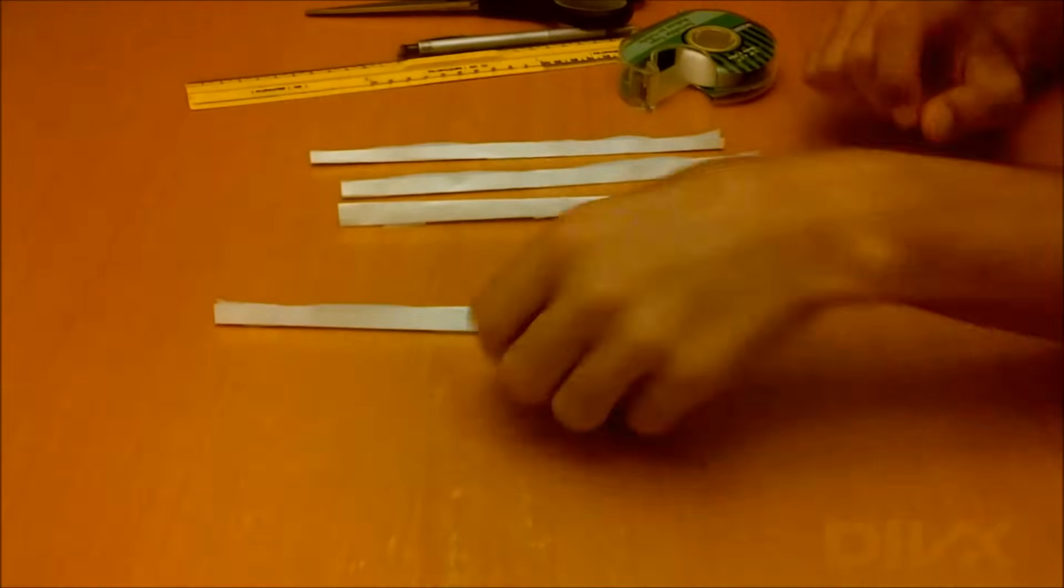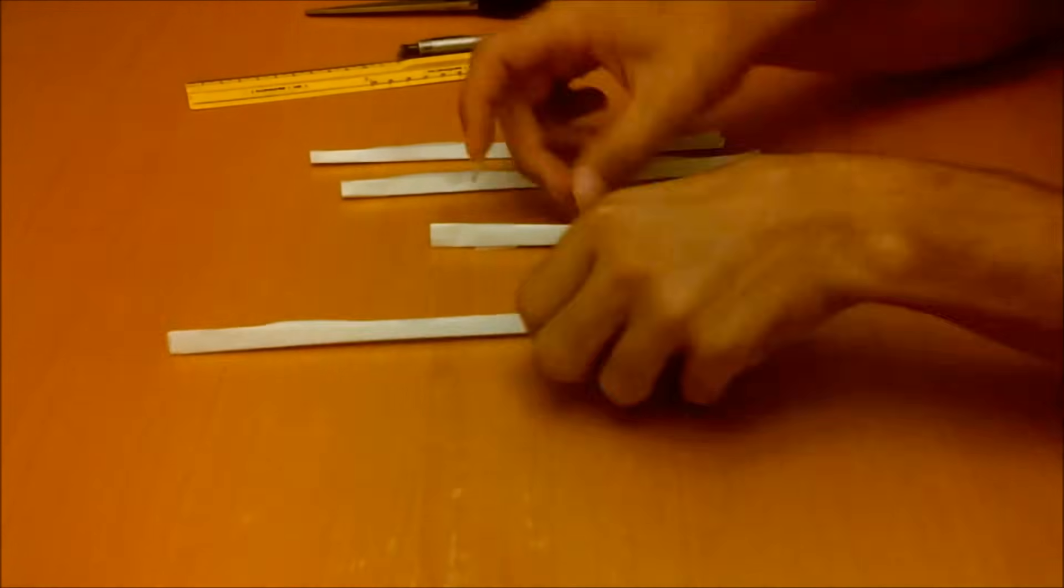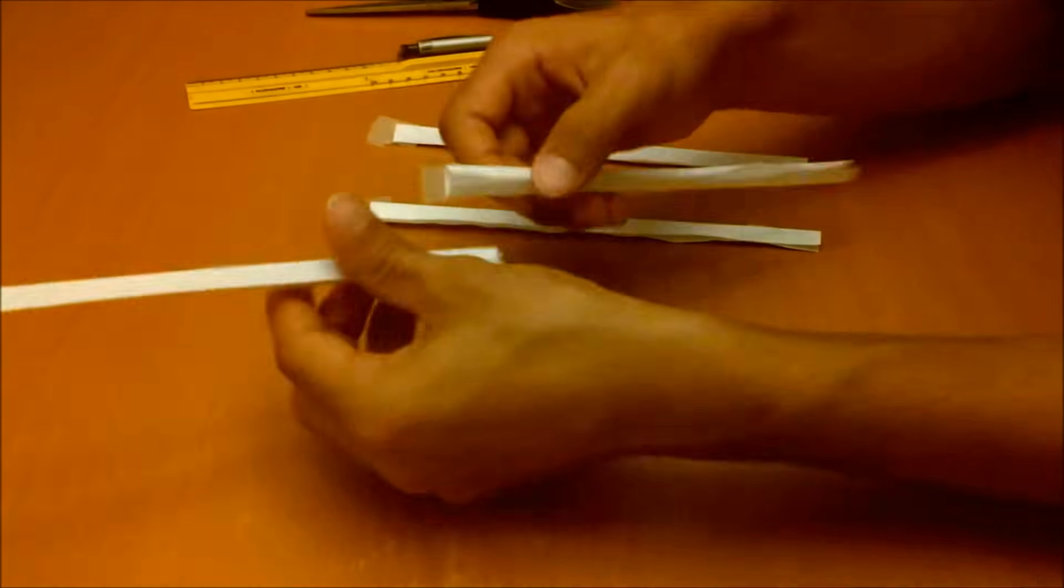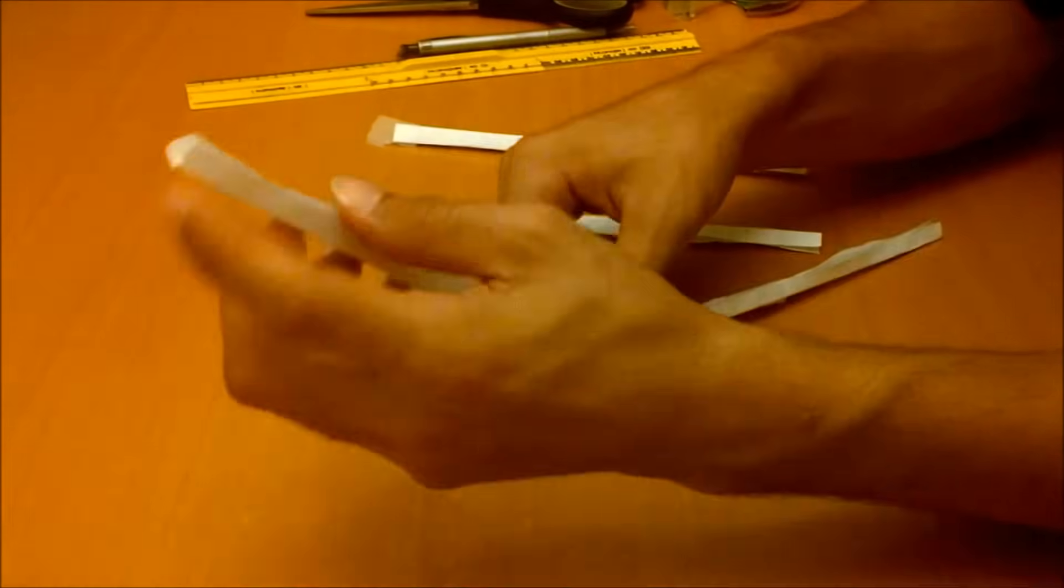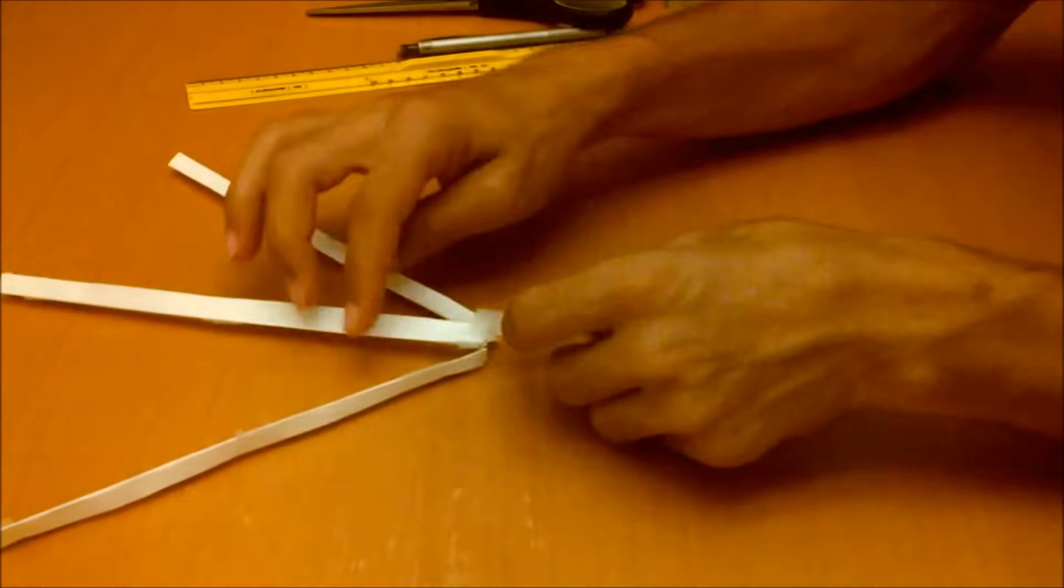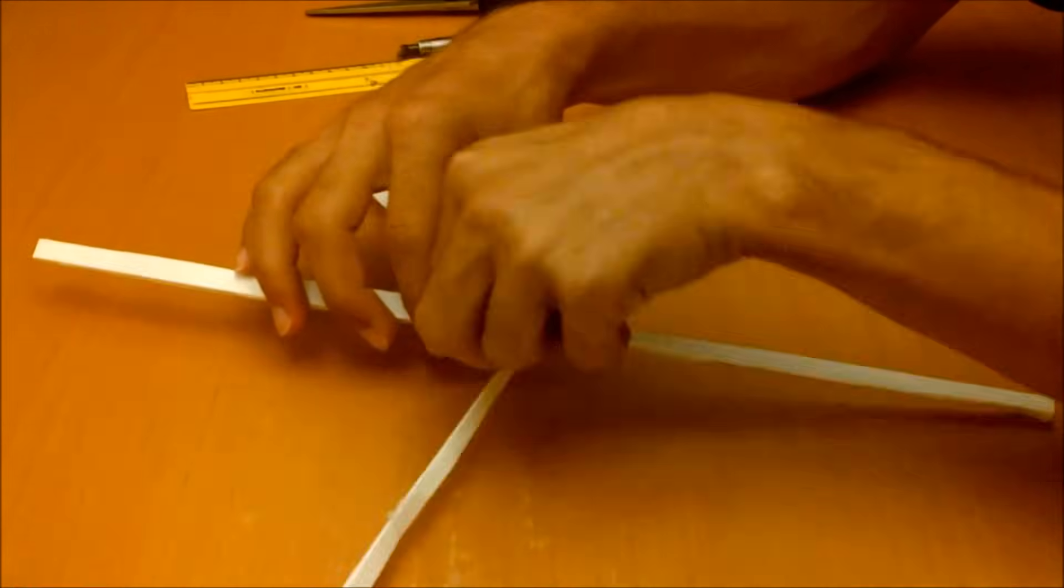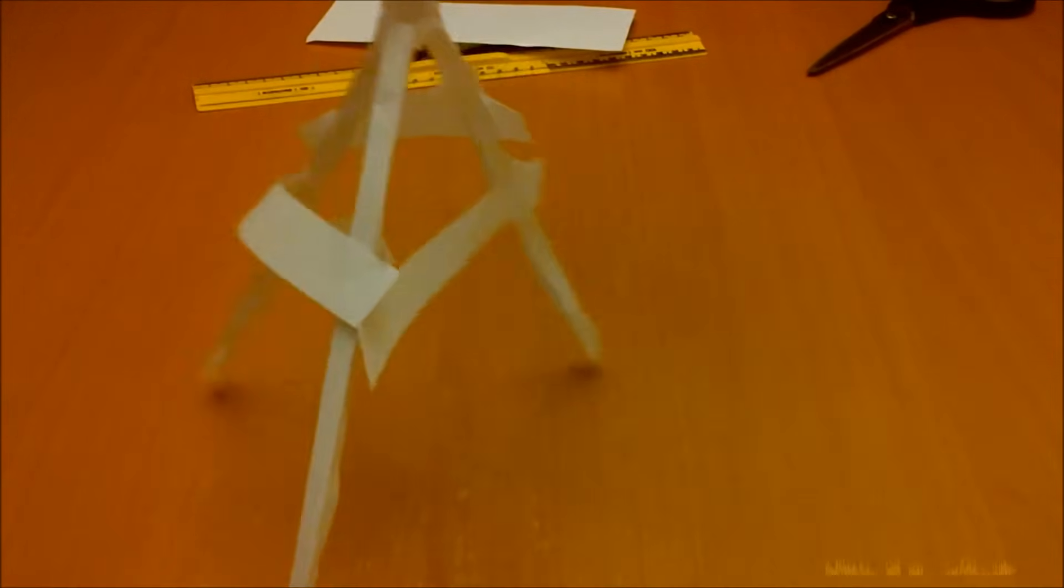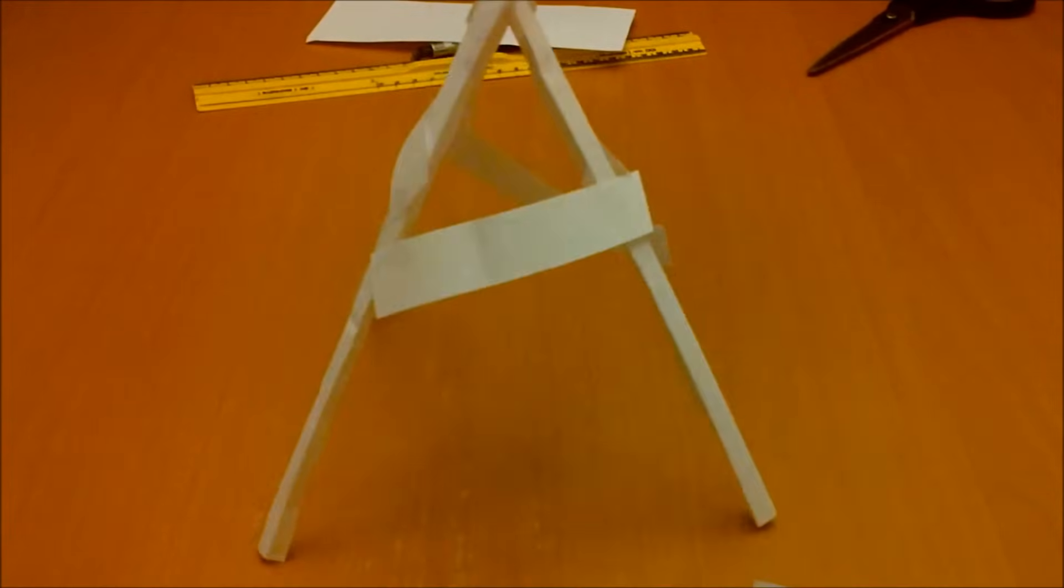You'll be using three to create a triangular-based pyramid and one to attach the three legs onto, as shown here. You should probably cut out another strip of paper and do what I've done here: join the legs together and make them stable.